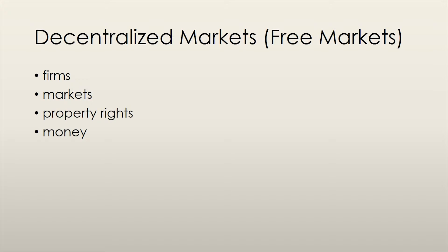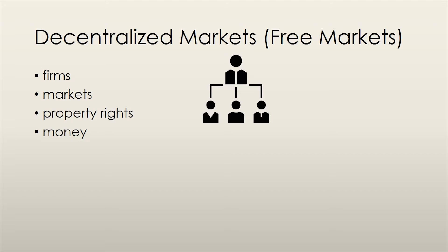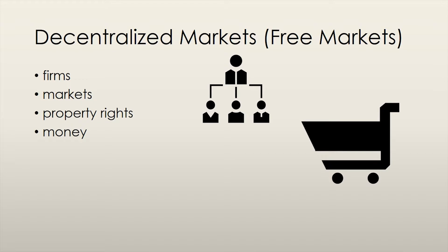For decentralized markets to work, we need four things to be in place. A firm is an economic unit that hires factors of production and organizes them to produce and sell goods and services. A market is some arrangement that allows buyers and sellers of goods to get information and to do business with each other. This doesn't have to be a physical place, just some arrangement. Amazon is an example of a marketplace that does not have a physical location.